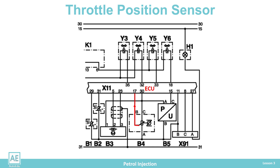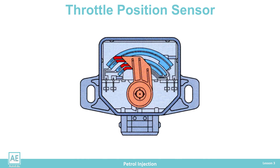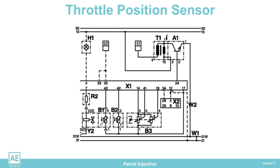To avoid a stoppage in the operation of the injection system, a double potentiometer with two sliders working in parallel is placed in the sensor, and the sensor sends two identical data streams to the ECU. When one potentiometer fails, the other still works correctly and sends data to the computer.